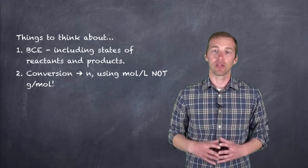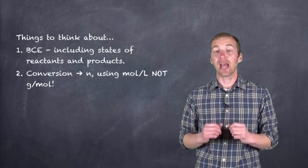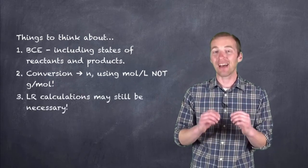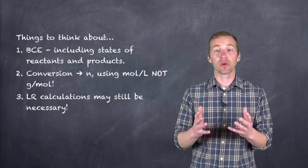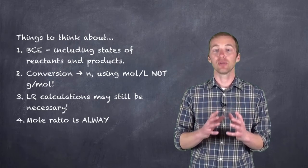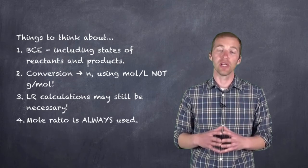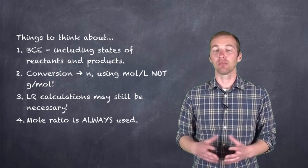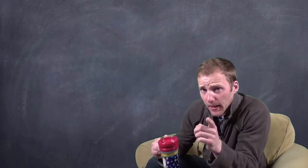If you're given concentration and volume, use n equals c times v to figure out the number of moles. If you can figure out the number of moles of both reactants, yes, you have to do the boss test — you have to calculate the limiting reagent. And then of course, like any stoichiometry problem, you have to use the bridge from known to unknown: use the mole ratio to figure out the number of moles of product being produced.